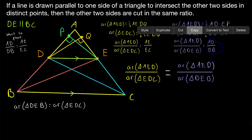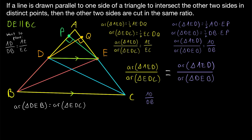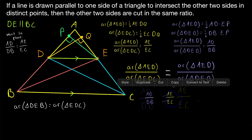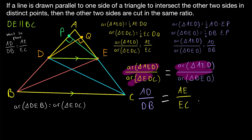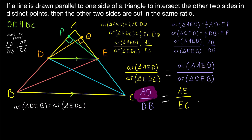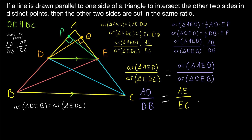Thus, by substitution, the ratio of AD to DB equals the ratio of AE to EC. Our parallel line DE has cut the two sides of the triangle in the same ratio. That completes the proof of the basic proportionality theorem.